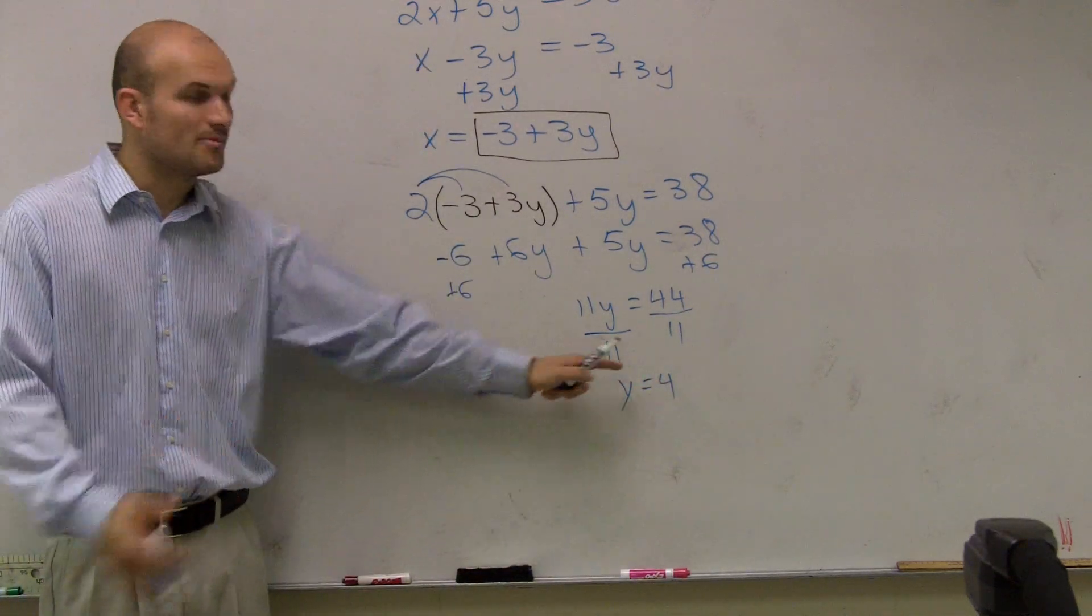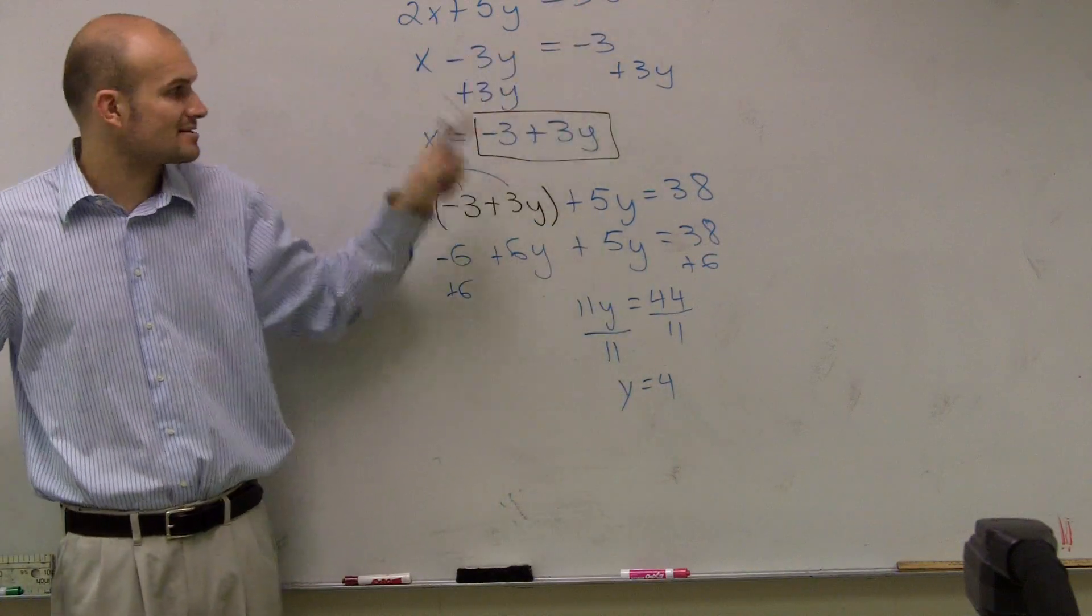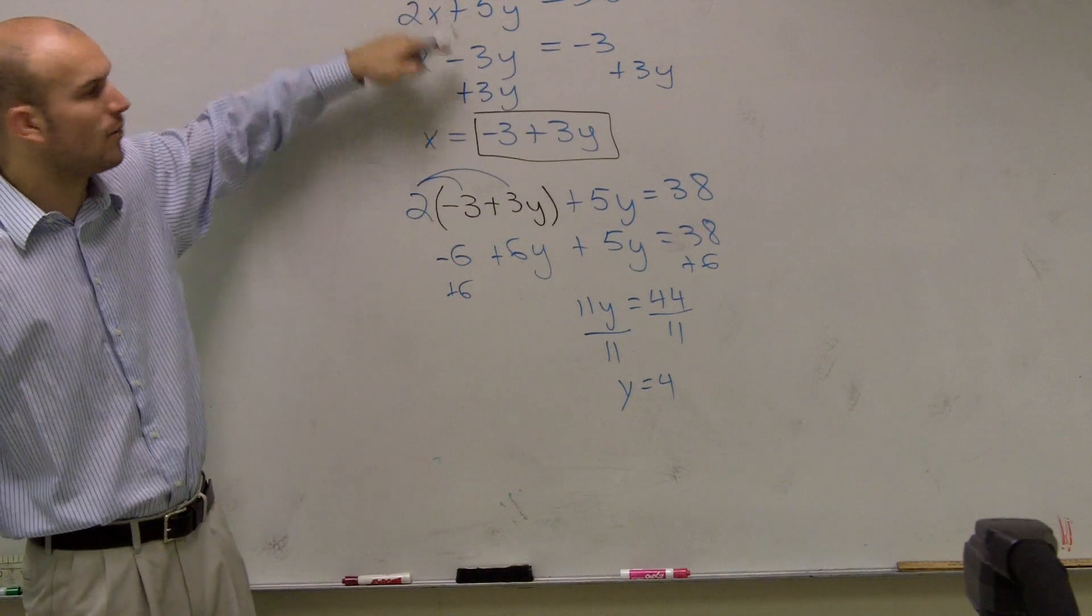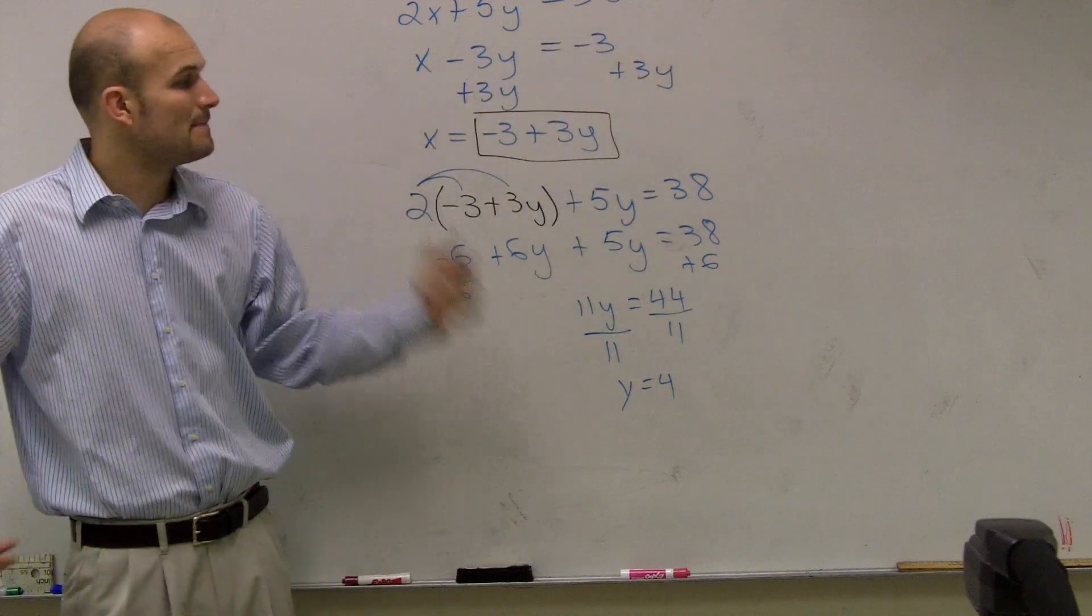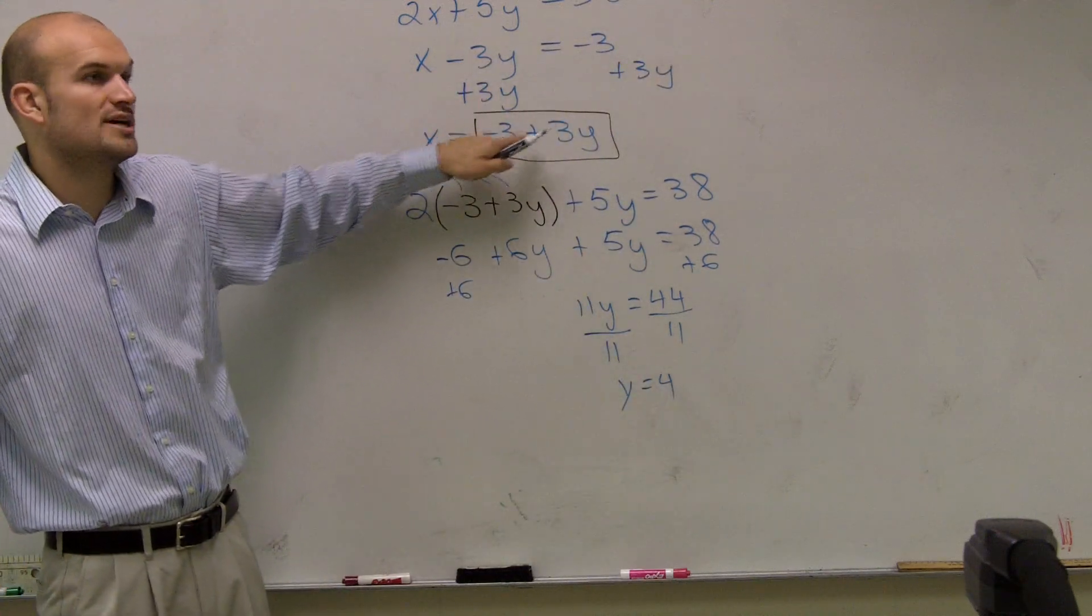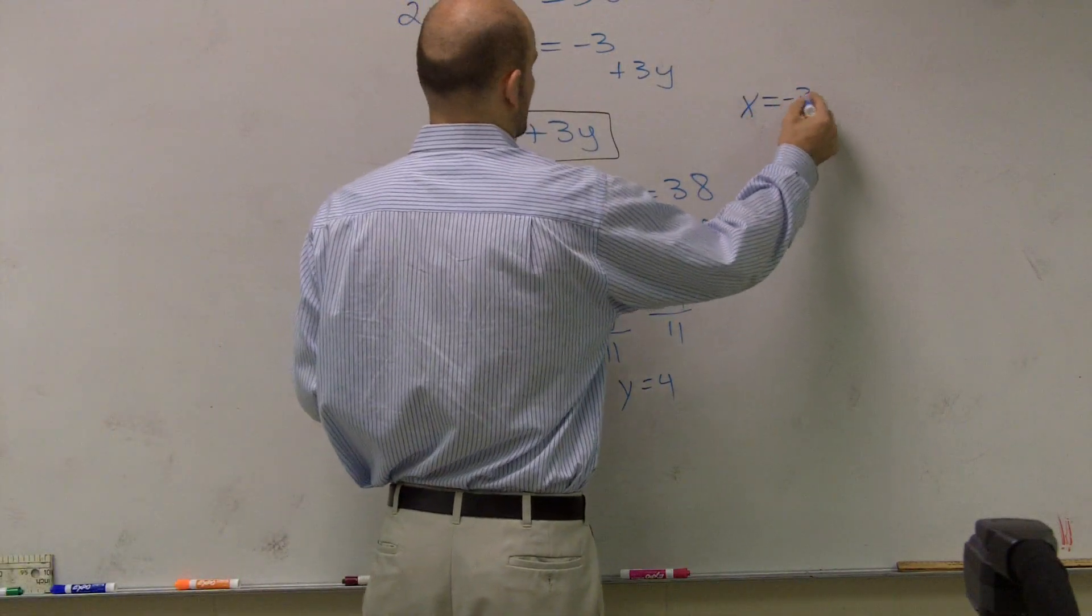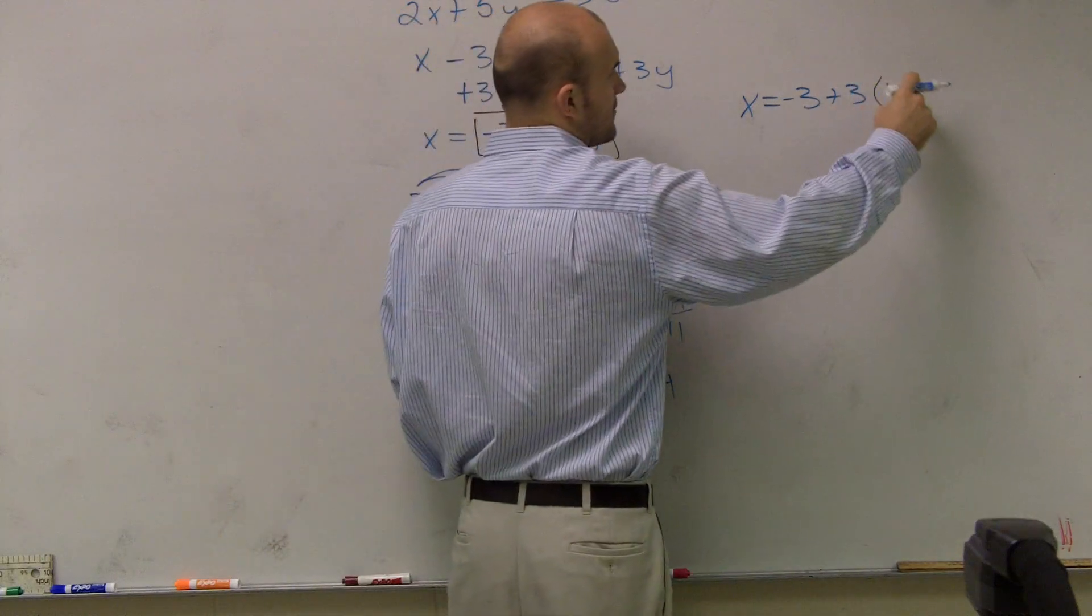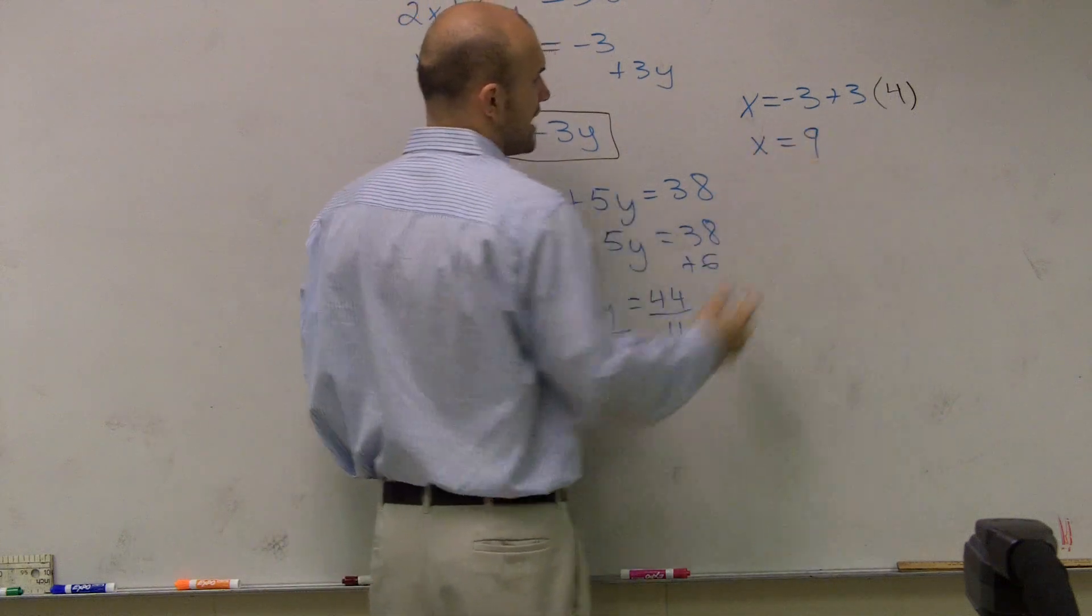Does everybody see that? Now I know what my value of y is. I can plug that back into my equation to find the value of x. And it's important. You can plug your y into either one of these. But once you plug y into one of these equations, you then have to solve for x again. So the best thing to do is to take that value of y and plug it back into the equation when it's already solved for x. So now I can say x equals a negative 3 plus 3 times my value of y, which is 4. So therefore, x equals 9.